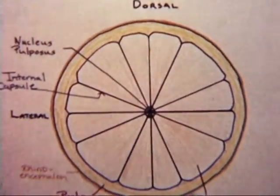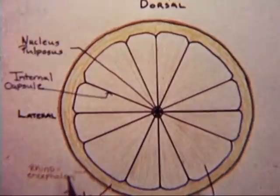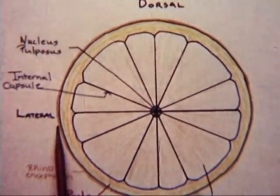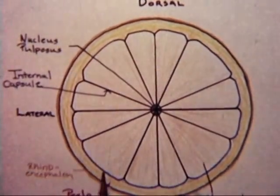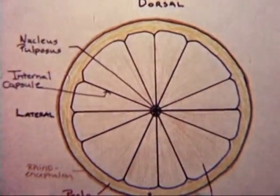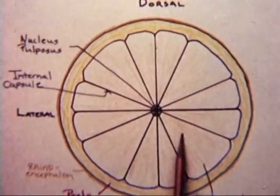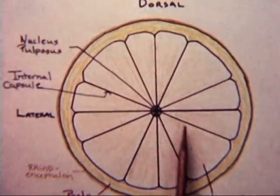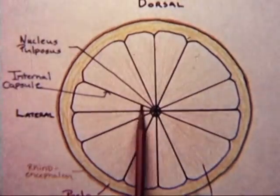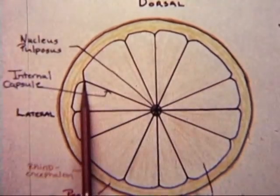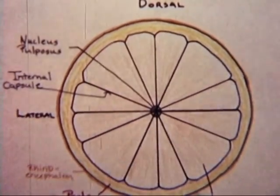Reviewing diagrammatically, we have seen in coronal section the rindencephalon, the pila mater, the norengiate lobes, the nucleus pulposus, and the internal capsule.